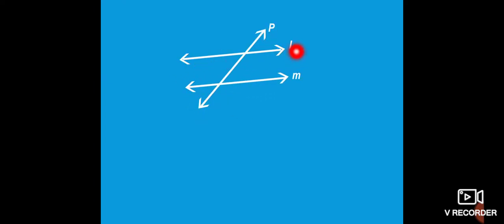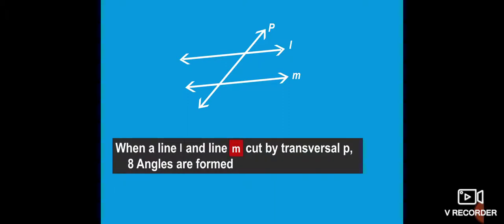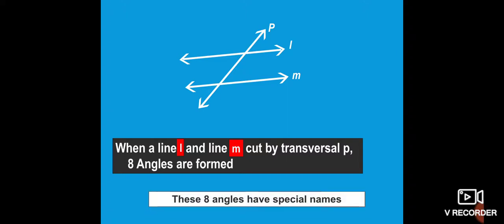Here you can see another line L and line M. We call this line P a transversal. P is a transversal here. When line L and line M are cut by a transversal P, eight angles are formed. These eight angles have special names.